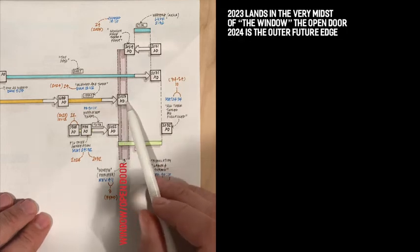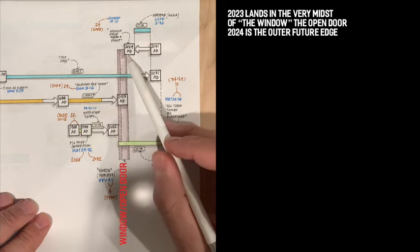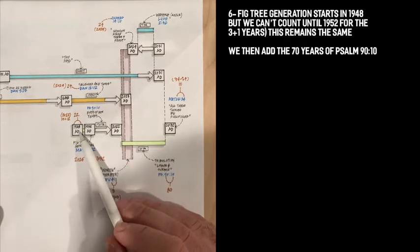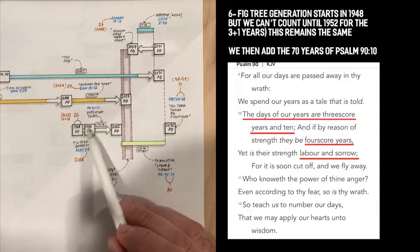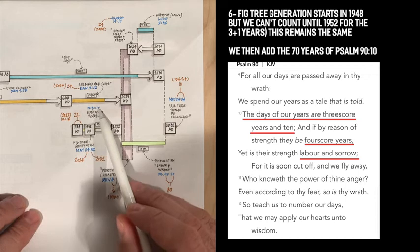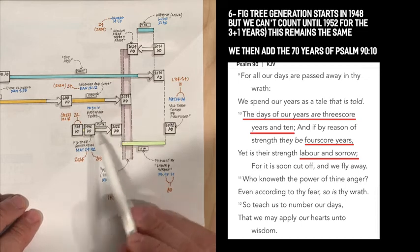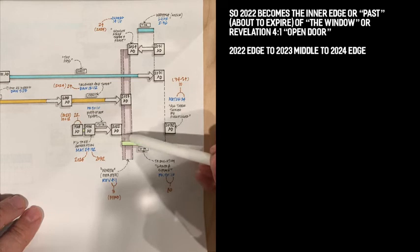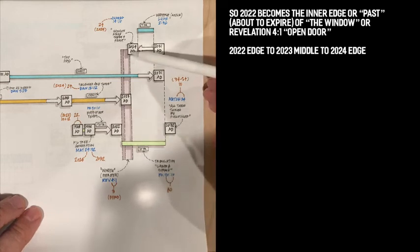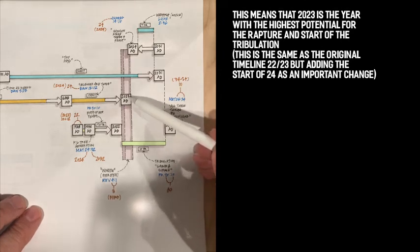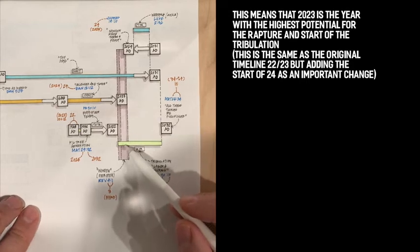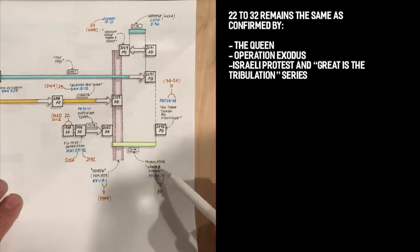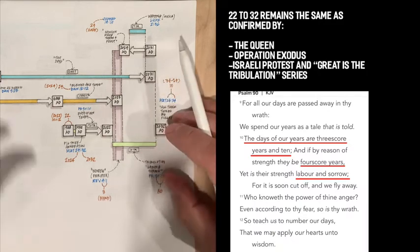Now you see that the window, 2023, lands right into the window. Its edge will be 2024. Its middle will be 2023. Now, we're going to also look at the fig tree generation, which you know from the calendars is 48 to 52. That doesn't change. We're going to add the 70 years of Psalm 90 to get us to 2022. That's the other edge of the window. So you can see the window goes from the border or edge of 22 to the start or edge of 24, making 23 the absolute perfect spot within that window, leaving us then the 22 to 32, which is our 10-year total labor and sorrow.